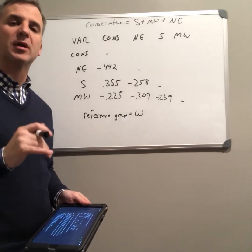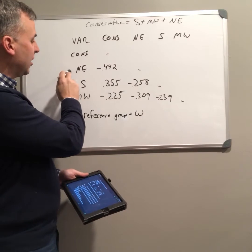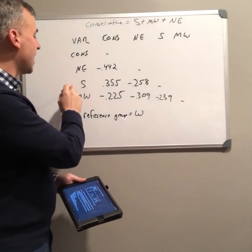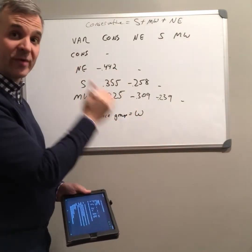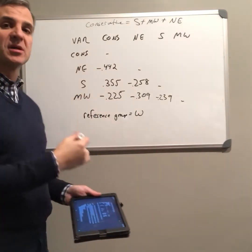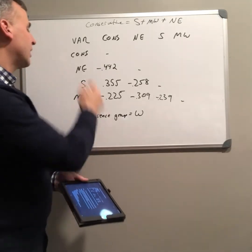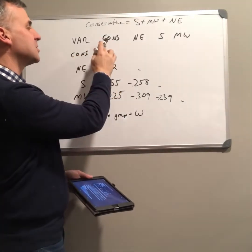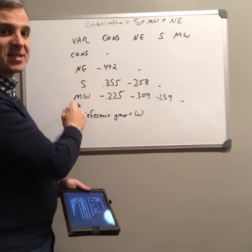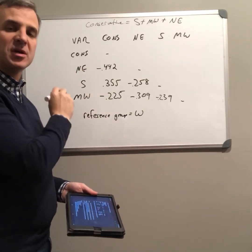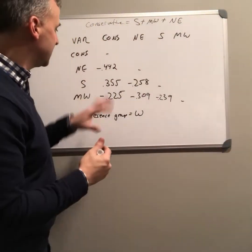Let's talk about how we interpret correlations with dummy variables. In this case I have three dummy variables — Northeast, South, and Midwest — and a reference group which is not included among these variables: people from the West. I'm trying to predict likelihood of endorsing conservative values depending on what region you are from. Conservative values is our Y variable, and I have three X variables, one for each grouping variable — that's G minus one dummy codes — and our reference group is West.